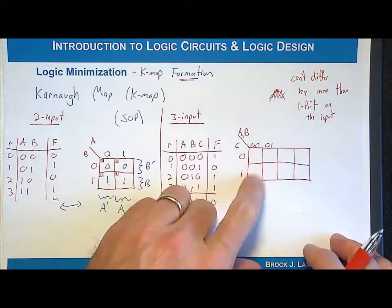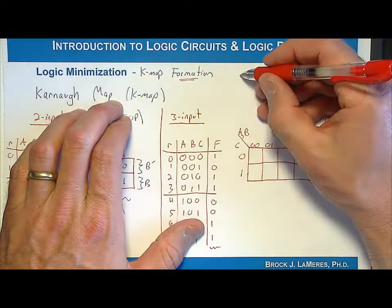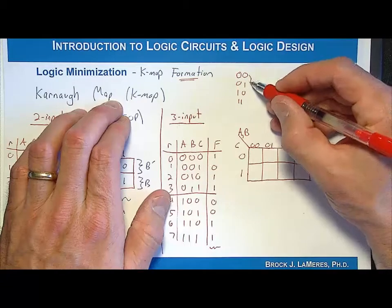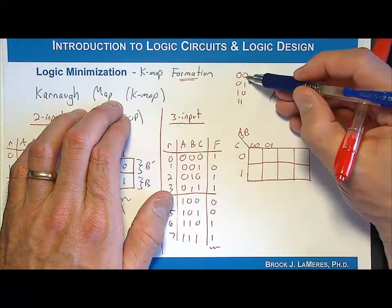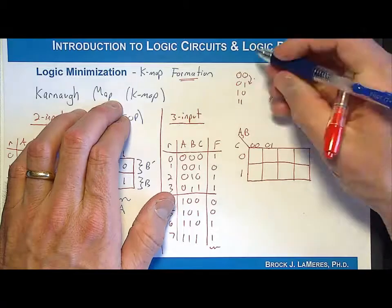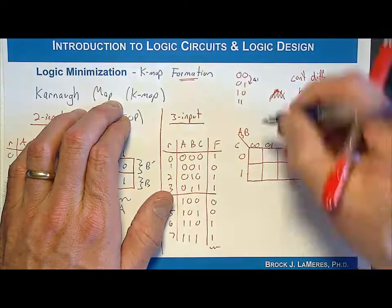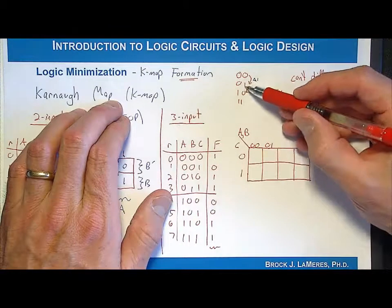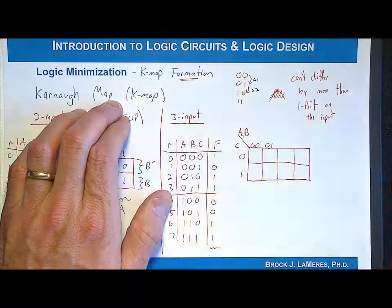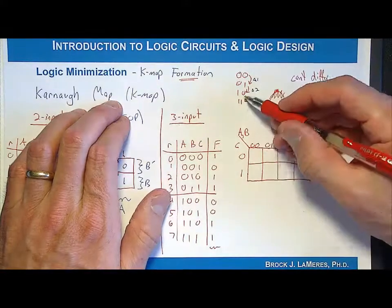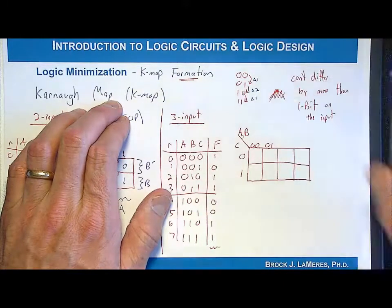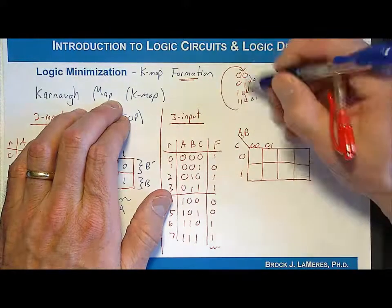If you think about a standard two-bit binary count — 00, 01, 10, 11 — going from 00 to 01 differs by 1 bit, but going from 01 to 10 differs by 2 bits, and rolling back from 11 to 00 also differs by 2 bits. So instead, we use the ordering 00, 01, 11, 10. This way, any neighbor only differs by 1 bit, and there's also a wraparound effect: the last column (10) is also a neighbor of the first column (00) because they only differ by 1 bit.